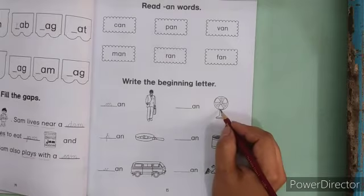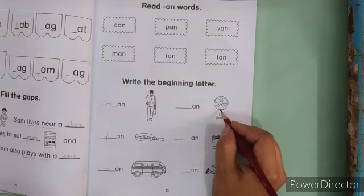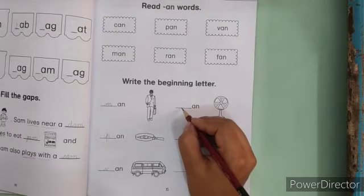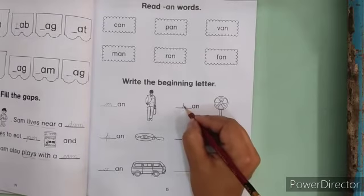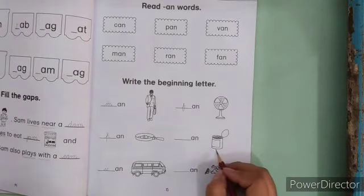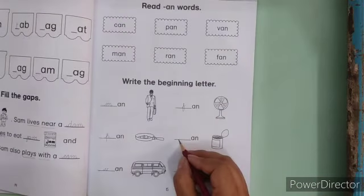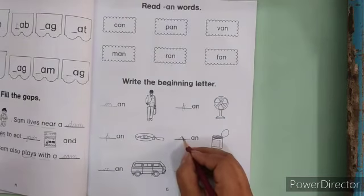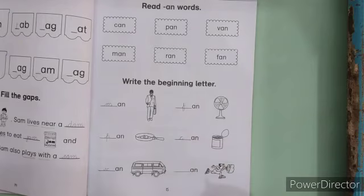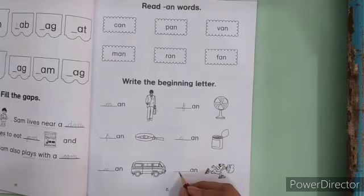Fan. So which sound is missing? Yes, F. F is missing. F and fan. Can. Which picture is this? Can. So which sound is missing? C, C and can. And which picture is this? Ran. R and ran.